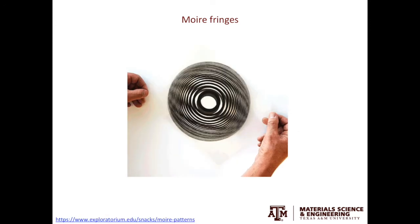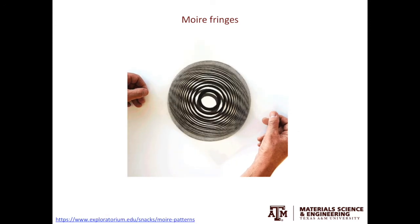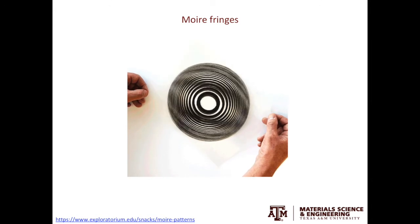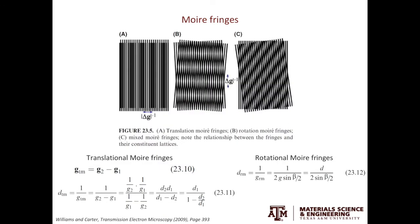To see moiré fringes, you don't need straight lattice planes. You can also use circles — this is just one fun example to show you. In TEM, because the lattice planes are straight, we'll use the straight lattice fringes to show you how we can connect the spacing of the lattice planes to the spacing of the moiré fringes.